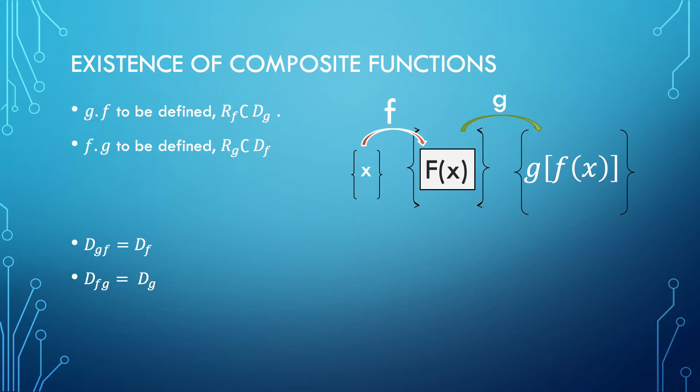For the reverse process, to obtain the Composite Function f∘g to be defined, the range of g must be a subset of the domain of function f. In conclusion, the domain of Composite Function g∘f equals the domain of function f, and the domain of Composite Function f∘g equals the domain of function g.